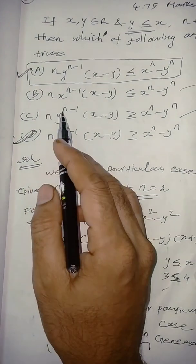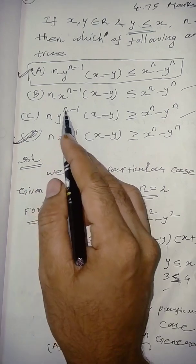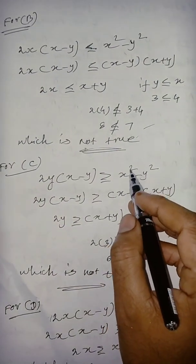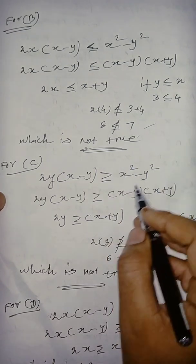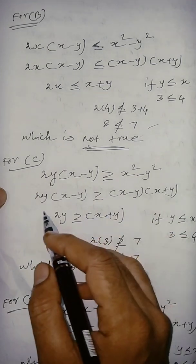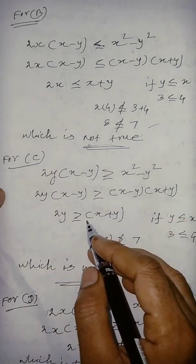So, let us say, n equal to, so, 2y, x minus y, which is greater than or equal to, so, instead of n, 2, x square minus y square, x minus y, x plus y, these terms are cancelled. So, 2y greater than or equal to x plus y.